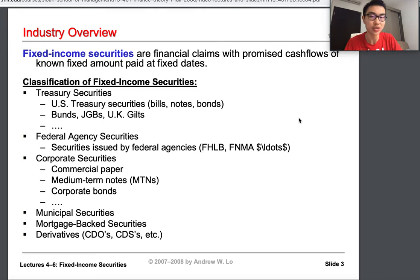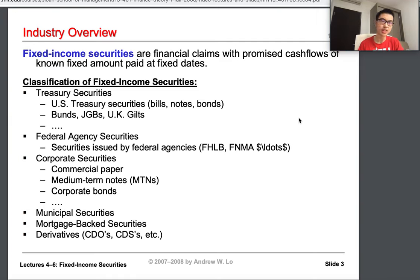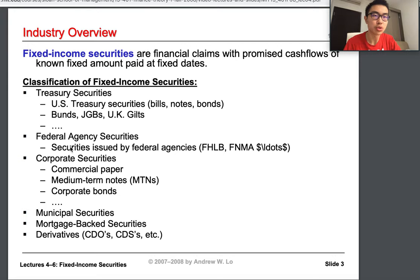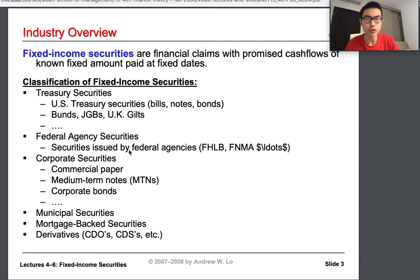The first category is treasury securities. If you're American, you know about U.S. Treasury bills, notes, and bonds. There are also UK gilts and Japanese government bonds. These are issued by the department of treasury. We also have federal agency securities, mostly in the U.S., issued by agencies such as the FHLB, FNMA, and also Freddie Mac — large mortgage companies backed by the government.